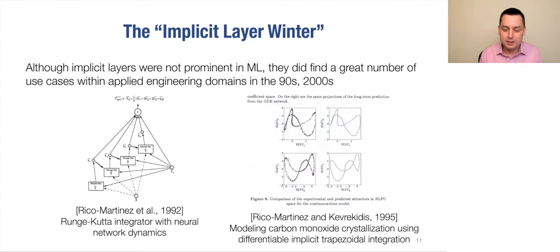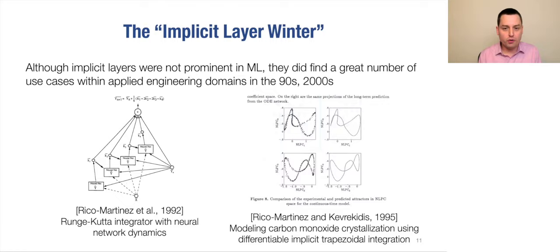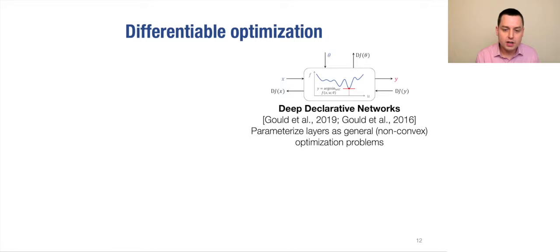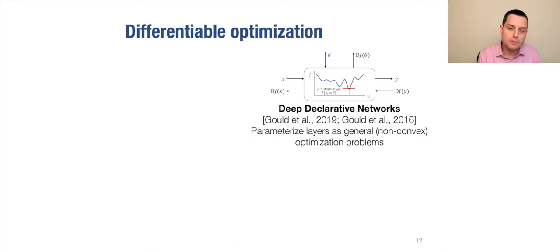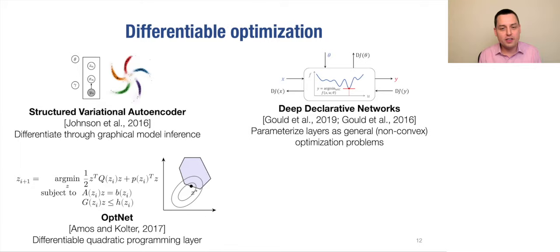Some of the things that spawned re-interest in implicit layers include the topic of differentiable optimization. Starting in the late 2000s, groups worked with differentiable variants of optimization problems. Stephen Gould in 2016 and collaborators formulated layers as non-convex optimization problems. Matt Johnson did work on the structural variational autoencoder, which differentiated through graphical model inference formulated as an optimization problem. My student Brandon Amos looked at differentiating quadratic programming problems as layers in deep networks. More recently, Brandon and collaborators integrated this with the CVX Py framework, with Atrey Agarwal and Stephen Diamond leading efforts to tightly integrate CVX Py into autodiff frameworks like PyTorch and TensorFlow.